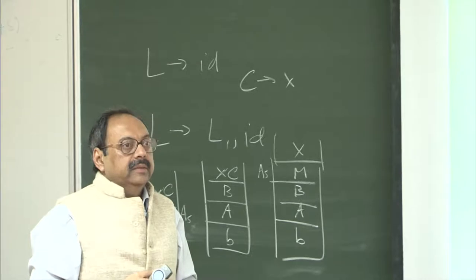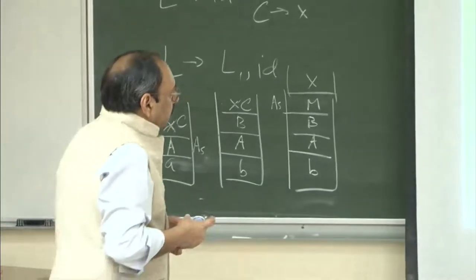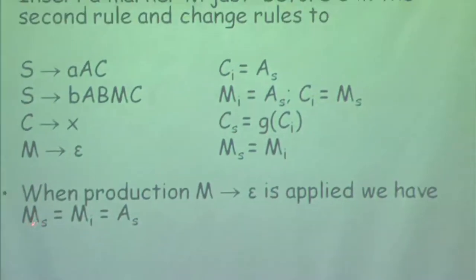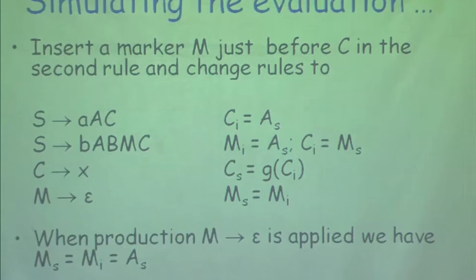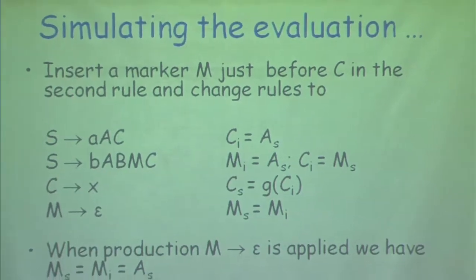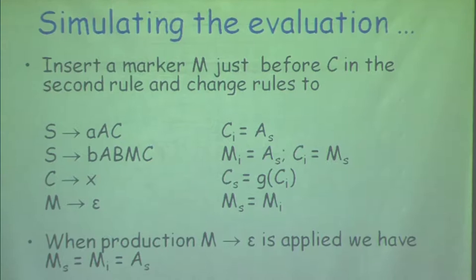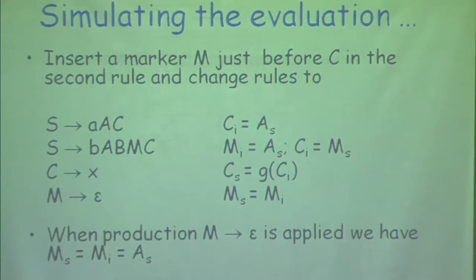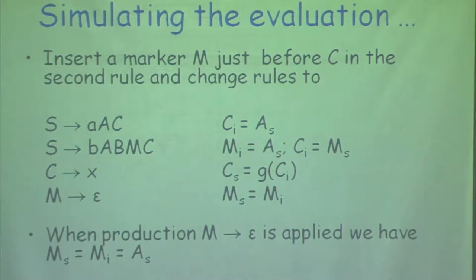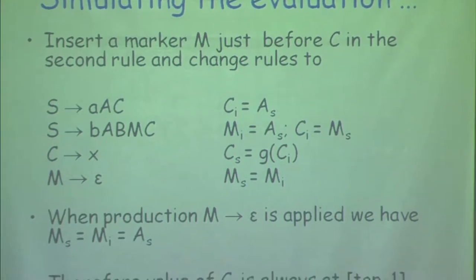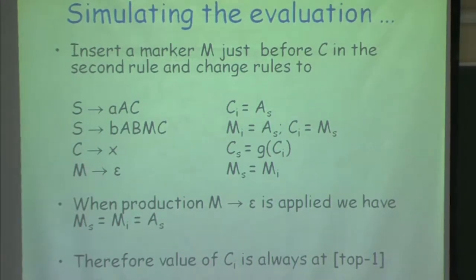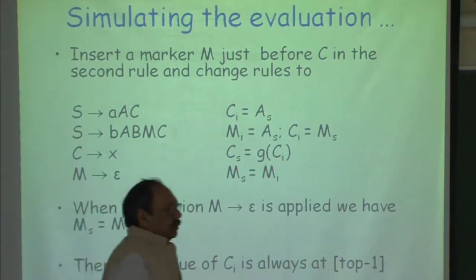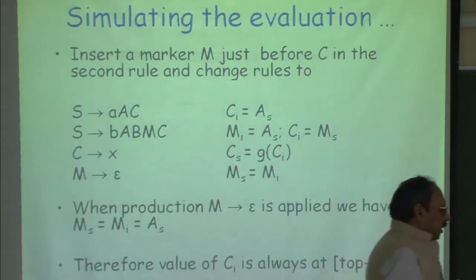Does this make sense? There is still a limitation. Now whenever we apply this production, I can always find that M synthesized is nothing but a copy of A synthesized, and therefore the value of C inherited — which is a copy of A synthesized — is always at top minus 1. I do not have to worry about it. But there is still a limitation: how do I track that copy when C inherited is not just a copy but a function?